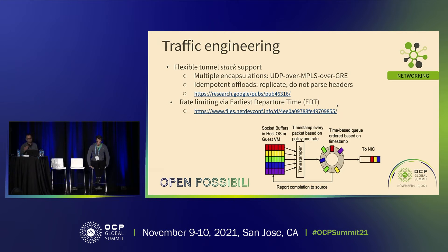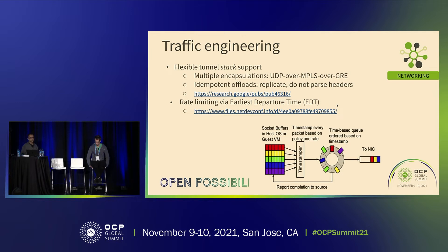Traffic engineering is another feature specific to our environments. At the fundamental level, it's about two things: deciding where packets go — which path they take through the network — and at what rate, i.e., bytes per second on each path. The way we do this is using encapsulation of some kind, and then using a timing wheel in the Linux kernel — the EDT proposal. This set of features is critical for operating our WAN infrastructure, where we have traffic going at different priorities, at different rates, along different paths, all controlled from the end host.